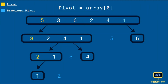Again, we follow the same steps of determining the pivot as the first element of the array and then partitioning the array. Here, considering 2 and 1, our pivot will be 2. Again, we will partition the array since 1 is less than 2. We have 1 in the left partition and 2 in the right partition. Similarly, we follow the same steps of partitioning until we get distinct elements in each partition.